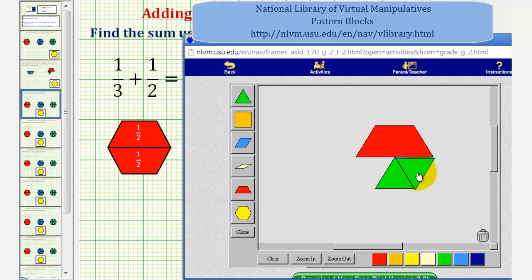And we could also exchange three green pattern blocks for one red pattern block. We'd have one, two, and three.